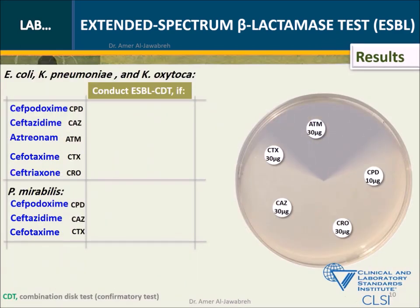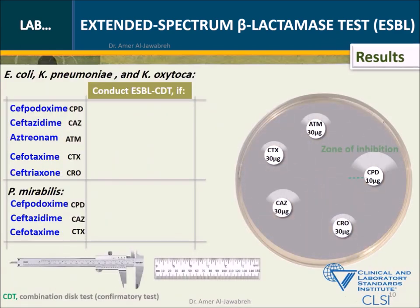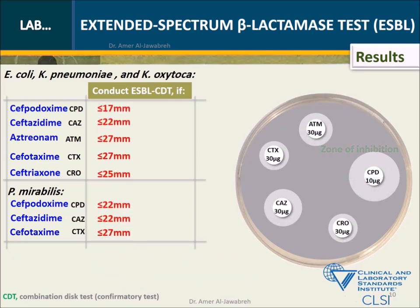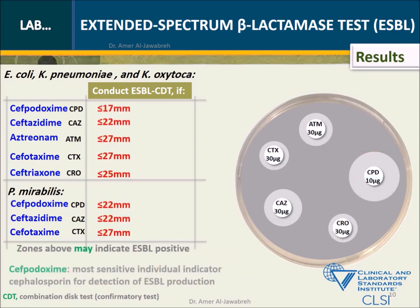Incubate aerobically at 35 degrees centigrade for 16 to 18 hours. For results, using a ruler or caliper, measure the zone of inhibition and compare the diameters with CLSI breakpoints shown here, below which CDT is indicated.